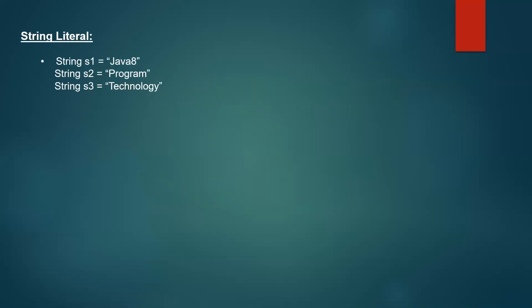First, string literal. A literal is similar to a primitive data type like int. In int, we declare and assign a value like int i equal to 10. In the same way, we declare a string literal as String S1 equal to "Java 8". Java 8 is the value assigned to the literal S1. The only thing we need to remember is that string literals should be enclosed in double quotations. We can also see other literal examples here: S2 equal to "program" and S3 equal to "technology".